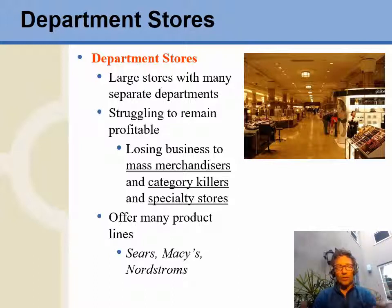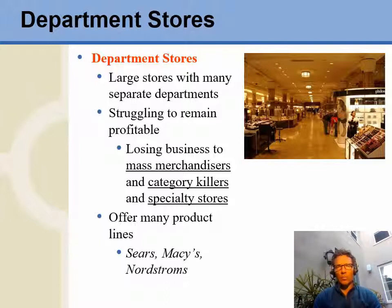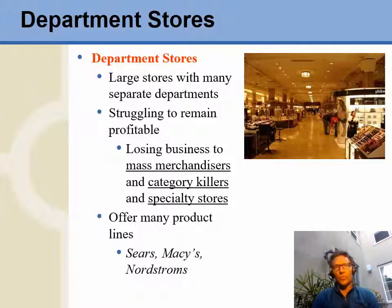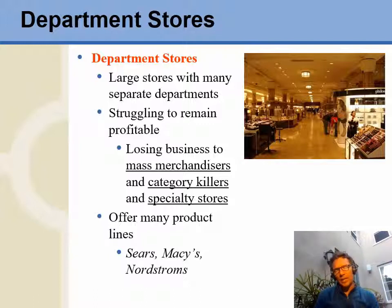Why do people go to department stores in the first place? A department store has staple products like linens, clothing, and dishware for your house — but you can go to a specialty store like Williams Sonoma or Pottery Barn and get perceived higher quality items. So why would you go to a department store? They're also losing business from category killers on baseline everyday stuff. They don't really have a point of difference. If you need anything for your home, you're not going to go to Sears for Craftsman tools when you can go to Home Depot. And if you want nicer stuff, you're probably not going to register for your wedding at Sears — you'd do that at Williams Sonoma or Pottery Barn.